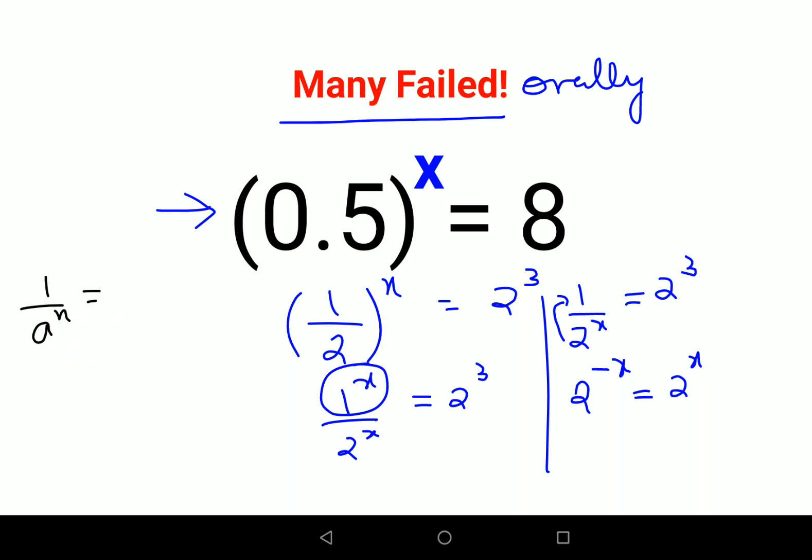So here, instead of... sorry, I forgot this is 2 raised to 3. Therefore I can say 2 raised to minus x equals 2 raised to 3. Therefore, we can say the value of x is nothing but minus 3.